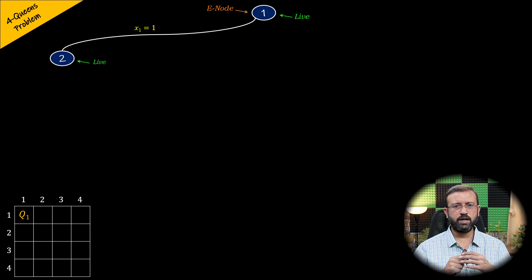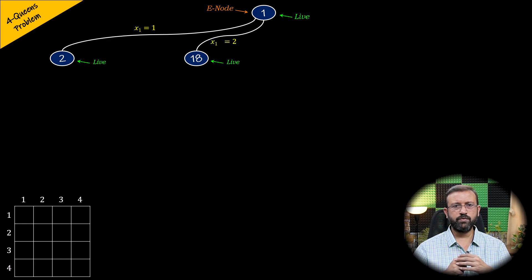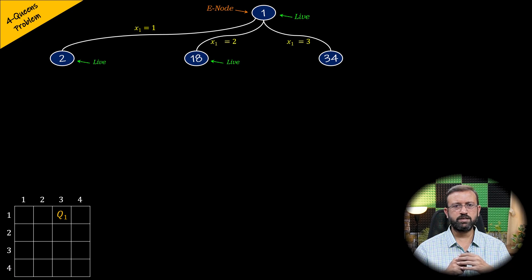Node 2 is added to the list of live nodes. Queen 1 can also be placed in row 1 and column 2, so x1 will be 2 and we are at node 18 of the state space tree, which is added to the list of live nodes. Note that nodes are numbered in depth-first order. Then queen 1 can also be placed in row 1 and column 3, so x1 will be 3 and we are at node 34 of the state space tree, which is added to the list of live nodes.